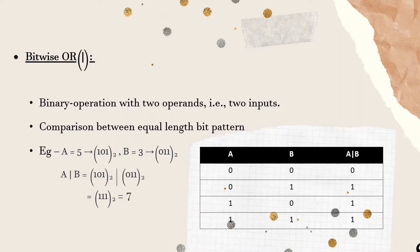Next is the bitwise OR operator. It is also a binary operator that takes two inputs and operates on two equal-length bit patterns. Similar to bitwise AND, but if both bits in the compared position are 0, the result is 0; otherwise it is 1. For example, 5 in binary is 101 and 3 in binary is 011, so A OR B gives us 111, which is 7.